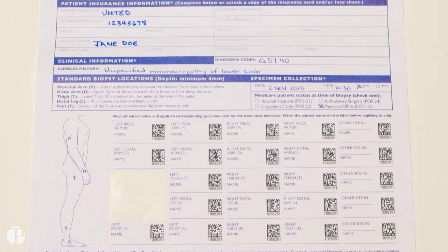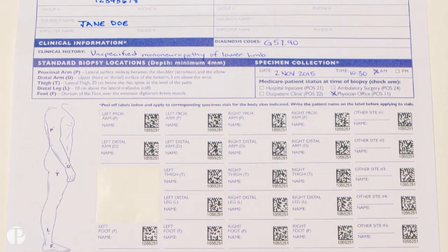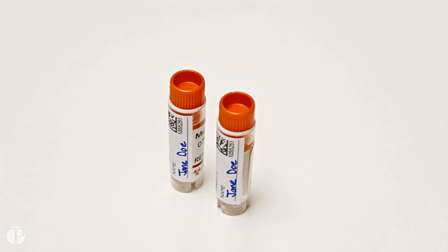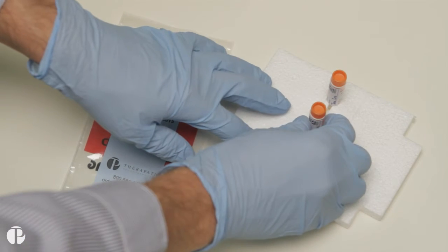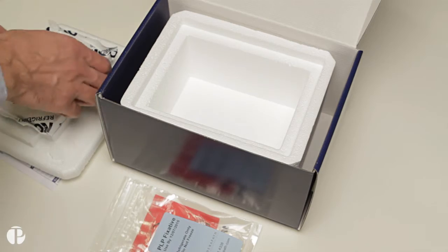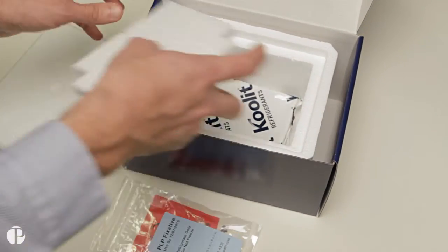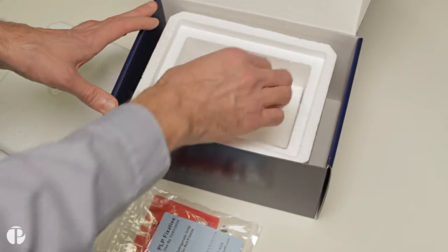Use the labels for the requisition form to label the vials with the patient's name. For shipping the samples back to Therapath, place the labeled vials in the biohazard bag. You will need the cooler and frozen ice pack for return shipping. Place the ice pack at the bottom of the cooler and add the foam barrier to the top of the ice pack.